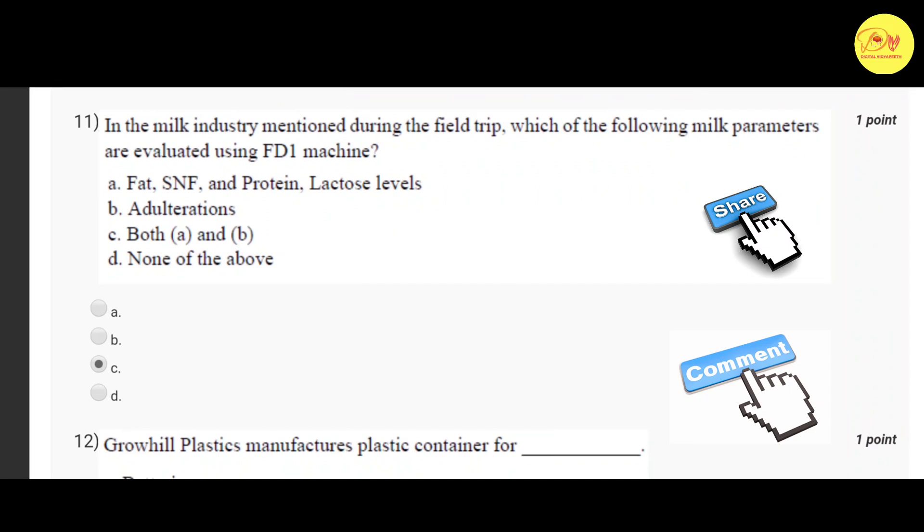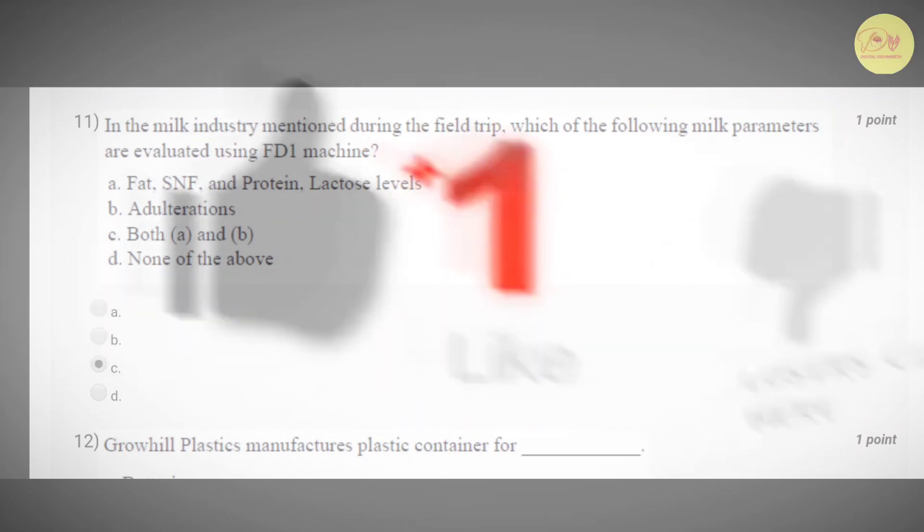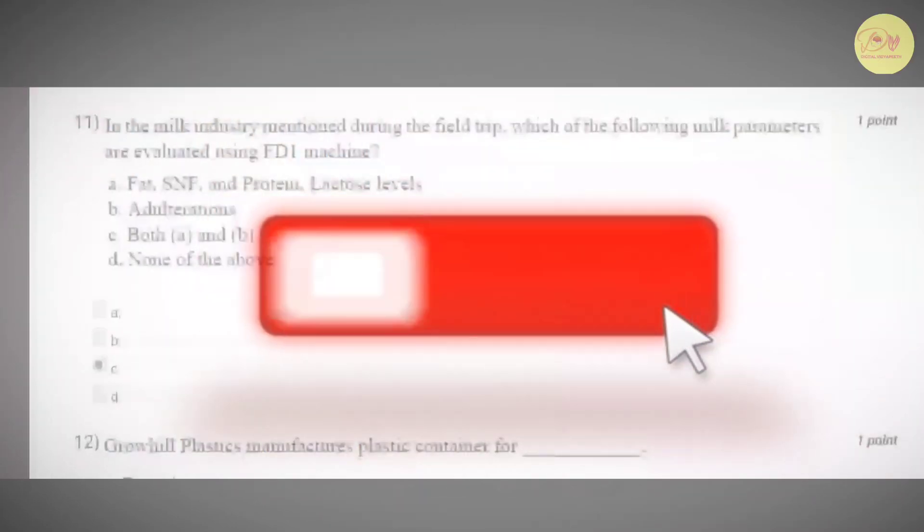Our eleventh question is in the milk industry mentioned during the field trip, which of the following milk parameters are evaluated using FD-1 machine. Correct option is C, both A and B, that is fat, SNF and protein, and second, adulterations.